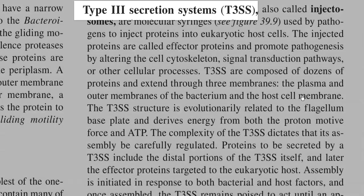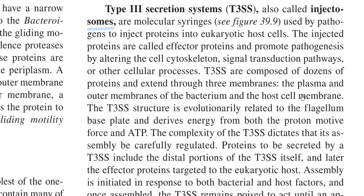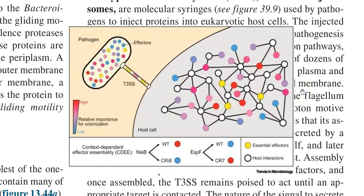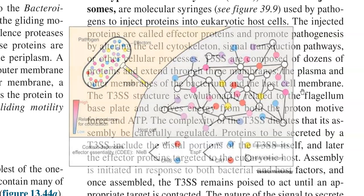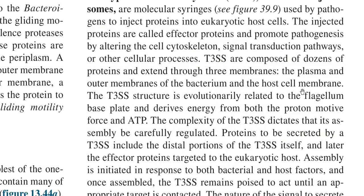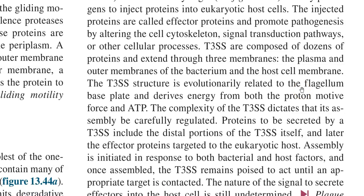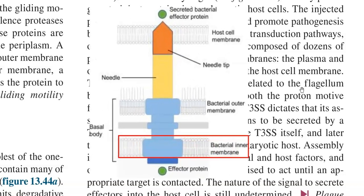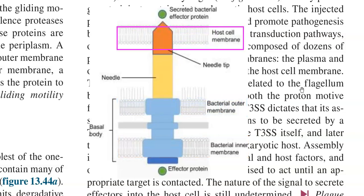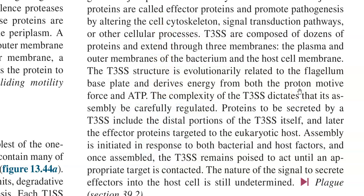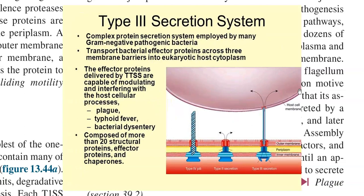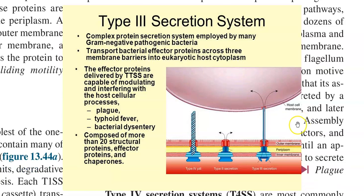The Type 3 secretion system is also referred to as injectosomes or molecular syringes, commonly used by pathogenic bacteria to inject proteins directly into eukaryotic host cells. The injected effector proteins promote pathogenesis by altering the cell's cytoskeleton, signal transduction pathways, and other cellular processes. Type 3 secretion systems are composed of dozens of proteins extending through all three membranes: the plasma membrane, outer membrane of the bacteria, and the host cell membrane. Evolutionarily, the Type 3 system is related to the flagellum basal plate, and energy is derived from both proton motive force and ATP.